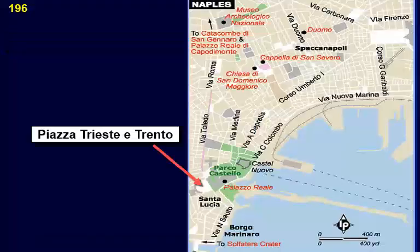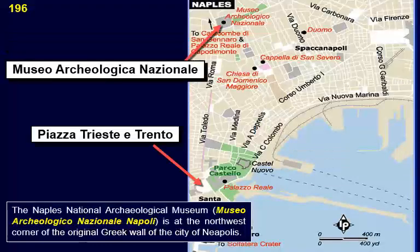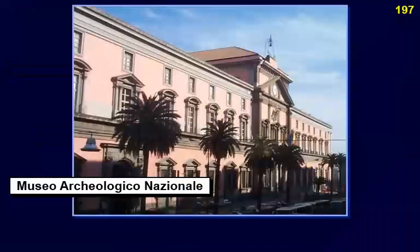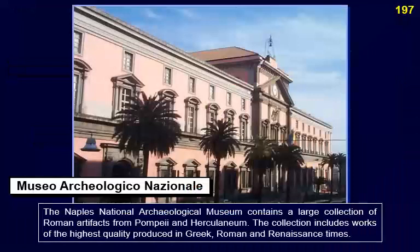The Naples National Archaeological Museum — Museo Archeologico Nazionale di Napoli — is at the northwest corner of the original Greek wall of the city of Neapolis. It contains a large collection of Roman artifacts from Pompeii and Herculaneum, including works of the highest quality produced in Greek, Roman, and Renaissance times.